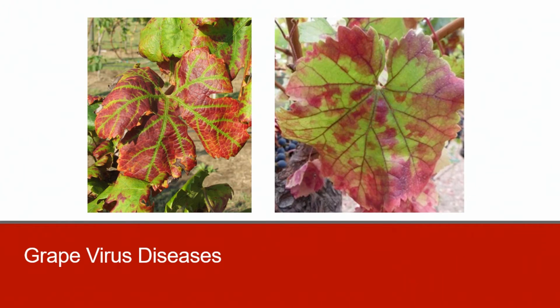There are over 60 known viruses that can infect grapevines worldwide, although only a handful actually cause disease and affect plant growth and yield. In Ohio, grape leafroll-associated viruses and grape red blotch virus are the two most detected viruses. The progression of vine decline by these viruses is generally slow but incremental. However, environmental stressors such as cold injury, drought, or too much water can expedite vine decline. Grape viruses can be transmitted and spread by mechanical means, insect vectors, nematodes, or by propagation.